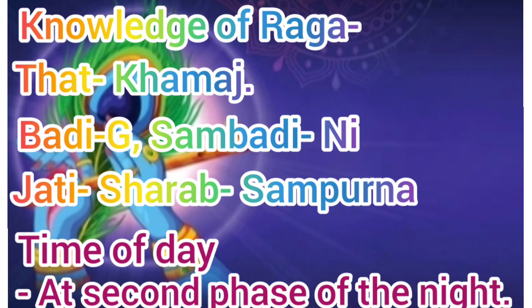The Raga Khamaj: Badishar is Ga, Shambadi is Sharni, Jati is Sharob — Shampurno. In Arohan six notes are used and in Avarohan seven notes. Both the Nishad are used: in Arohan Shuddha Nishad, and in Avarohan Komal Nishad.